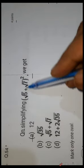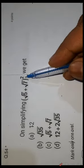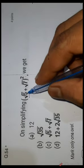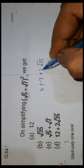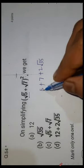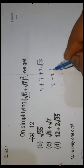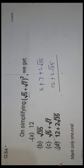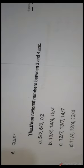Question number 54 is (√5 + √7)². Using the (a + b)² formula: √5² = 5, √7² = 7, and 2 × √5 × √7 = 2√35. So the result is 5 + 7 + 2√35 = 12 + 2√35. Option D is the correct answer.